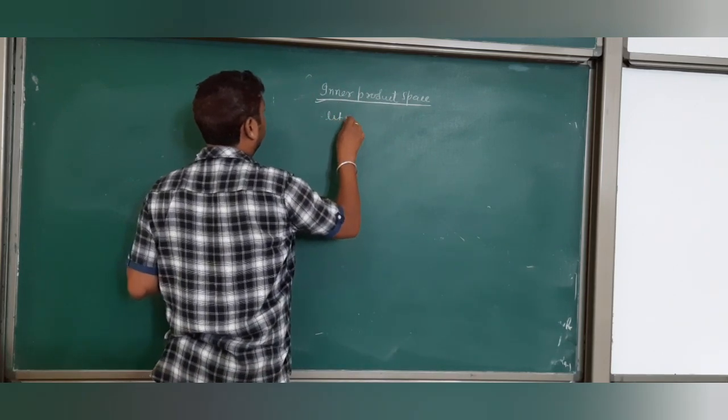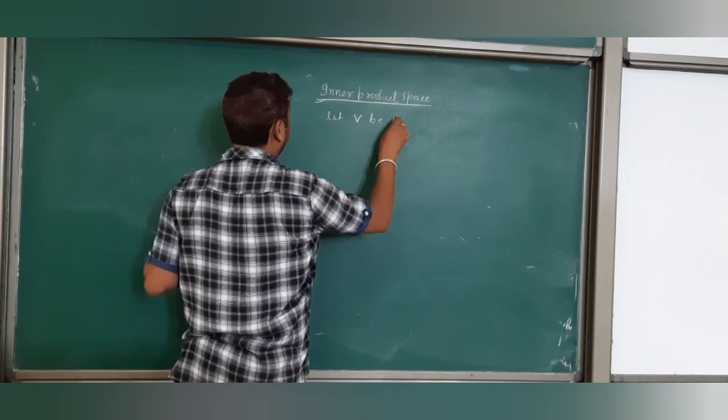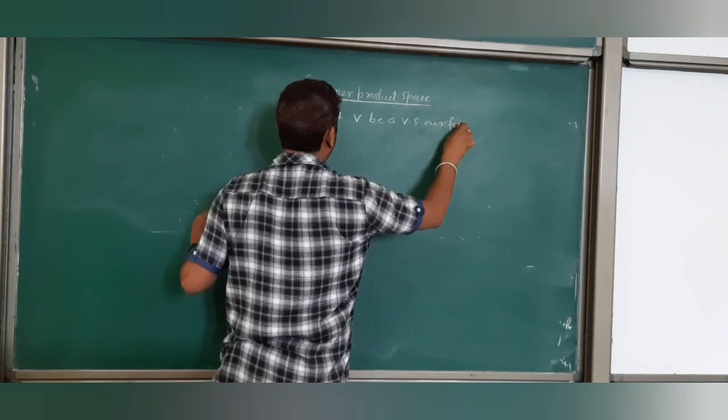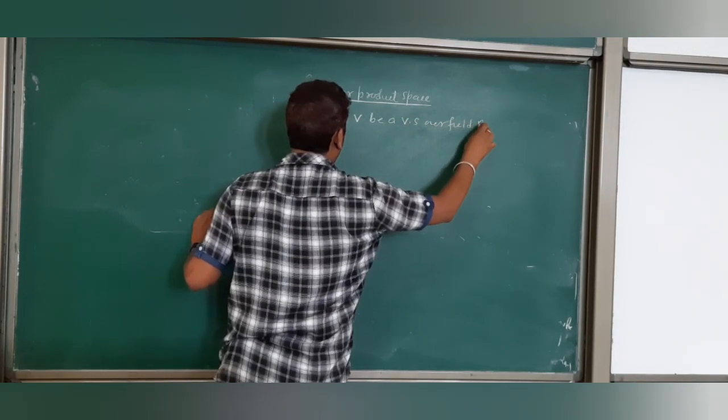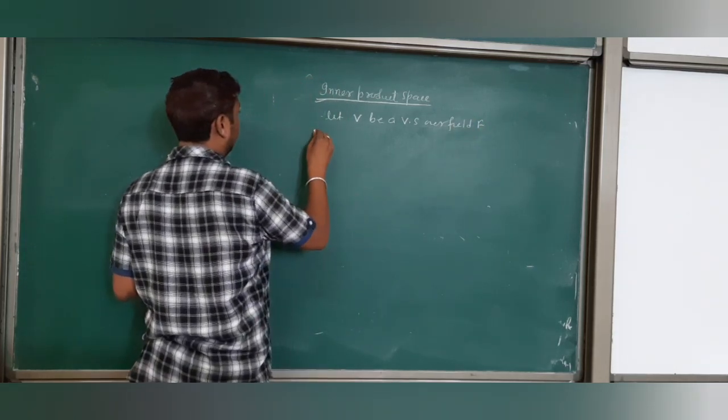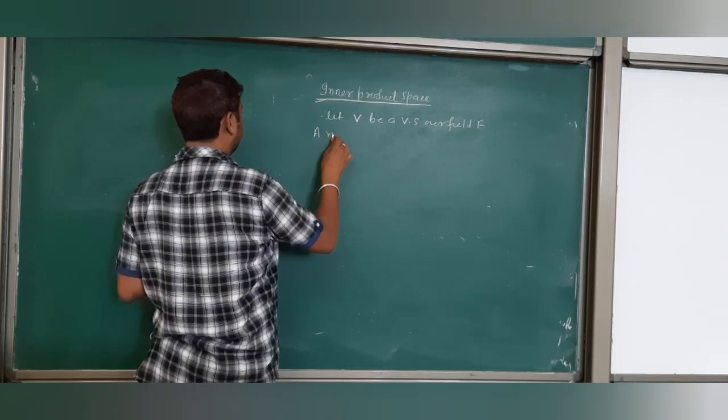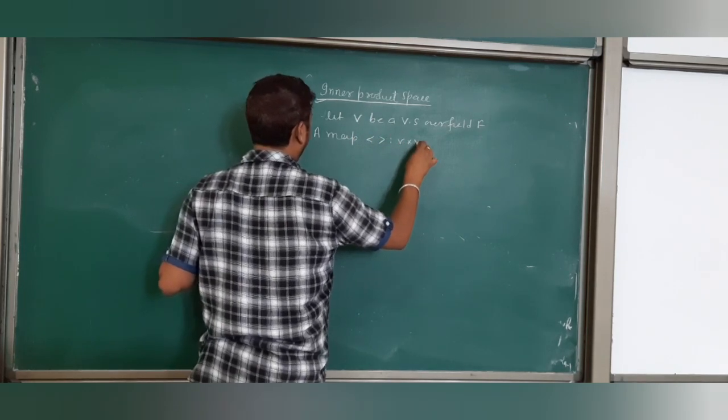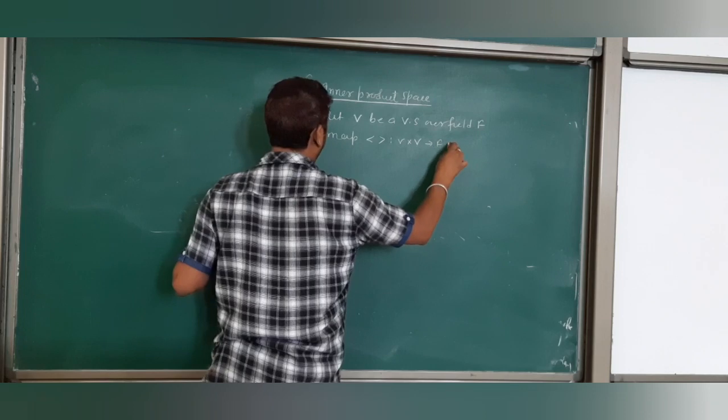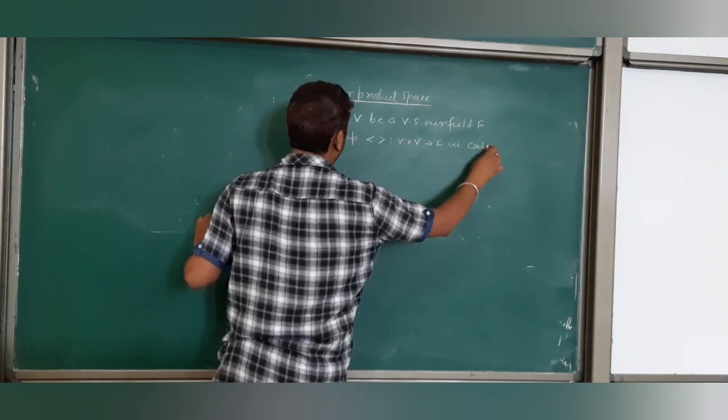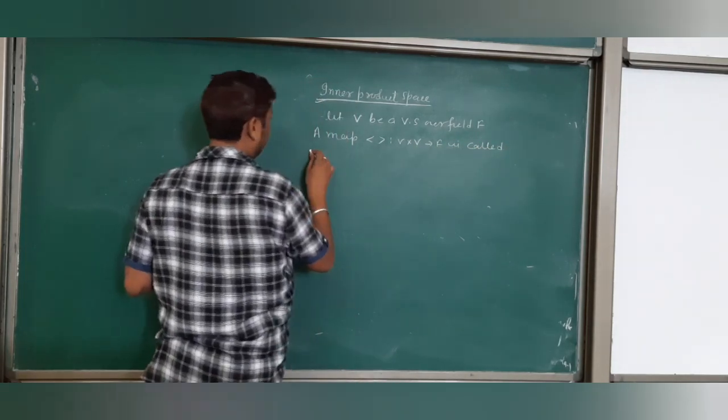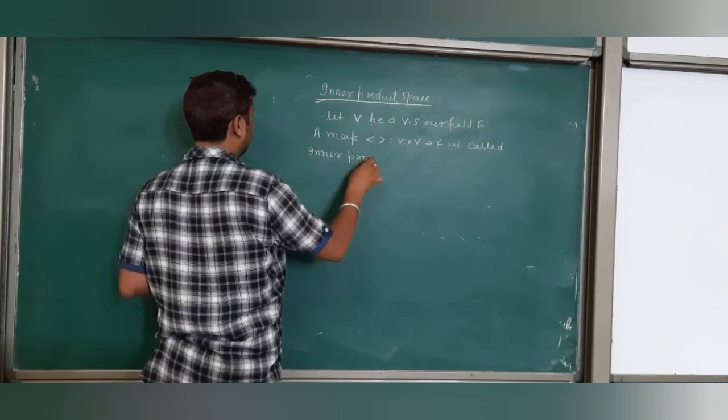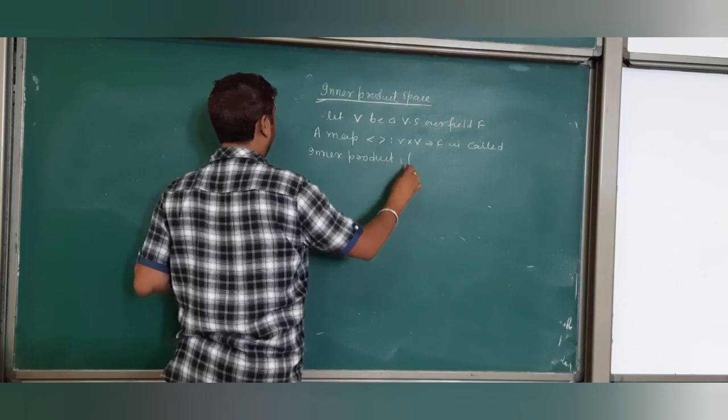Let V be a vector space over field F. A map M from V×V to F is called inner product if: